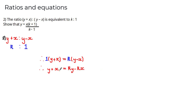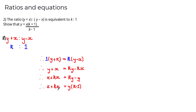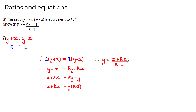Factorising the right-hand side: x + kx = y(k − 1). Dividing both sides by (k − 1) gives y = (x + kx)/(k − 1). Factoring x from the numerator gives y = x(k + 1)/(k − 1), as required.